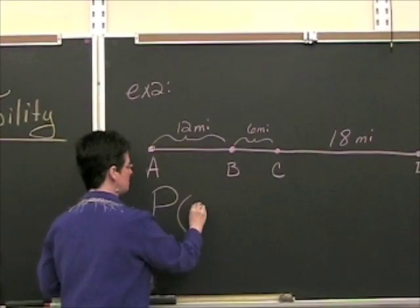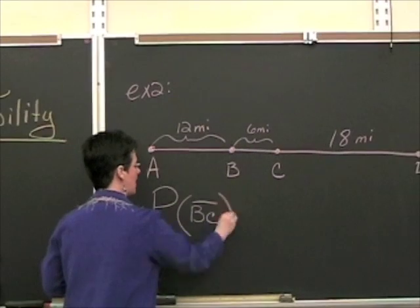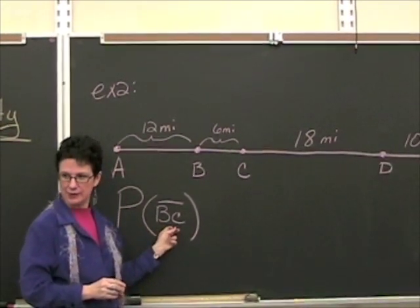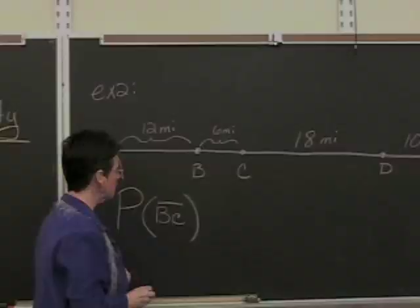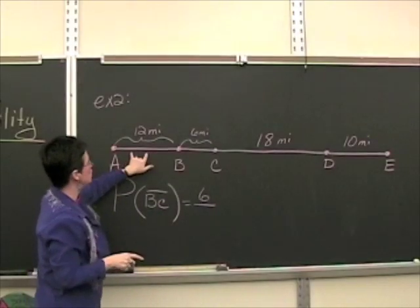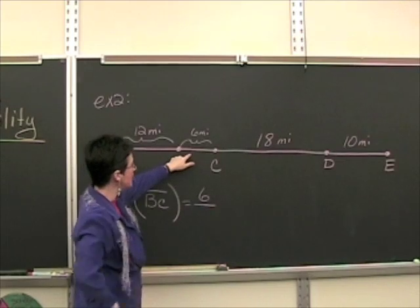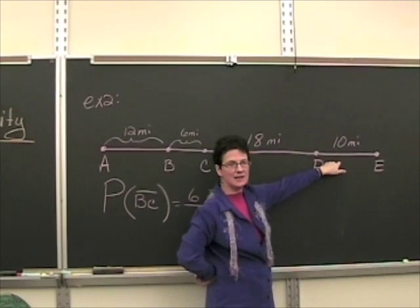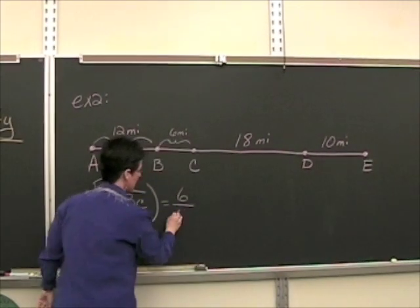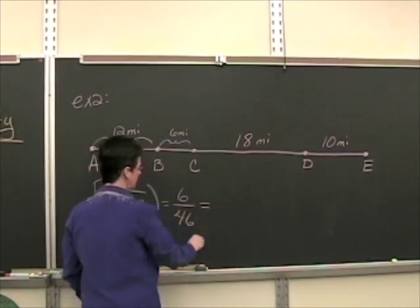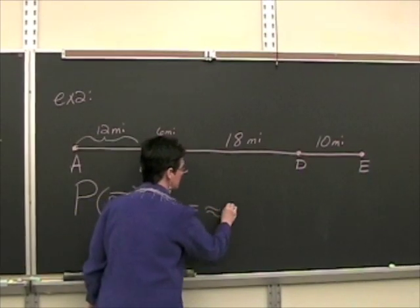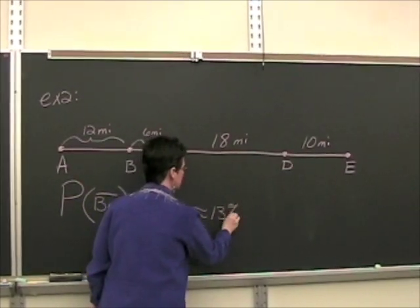Symbolically, we write this probability as P of segment BC, the chance that the tire is going to blow on segment BC. And mathematically, we simply write it as a ratio of the distance from B to C compared to the entire distance of the road from A to E. So it looks like 6 over 46, which simplifies down to approximately 13%.